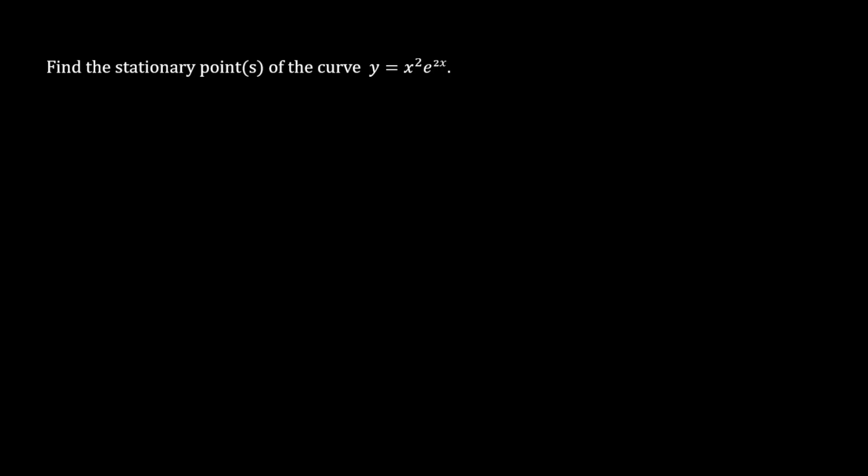We're continuing our study of differentiating with the exponential function with another application — this time finding the stationary points of a curve. The curve here is y equals x squared e to the 2x.